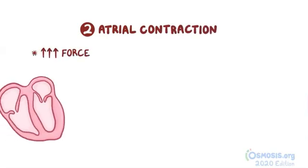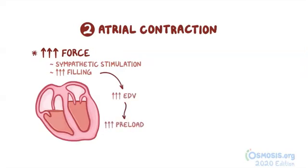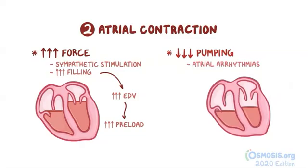The next factor is atrial contraction. Increased force of atrial contraction — whether from sympathetic stimulation or increased atrial filling — increases the volume of blood entering the ventricle, raising end-diastolic volume and preload. Conversely, when the atria cannot pump efficiently and in sync, as in atrial arrhythmias, the volume entering the ventricle decreases, causing a decrease in end-diastolic volume and preload.